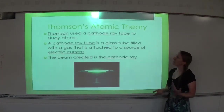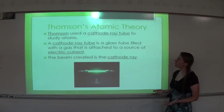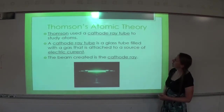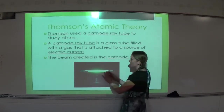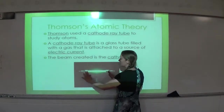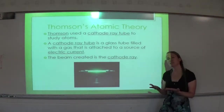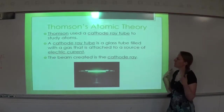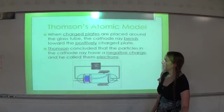Thomson used a cathode ray tube to study atoms. A cathode ray tube is a glass tube filled with a gas that is attached to a source of electric current. The beam created is the cathode ray — kind of like a long tube that, when powered by electricity, produces a beam of light, similar to fluorescent light bulbs in the ceiling.